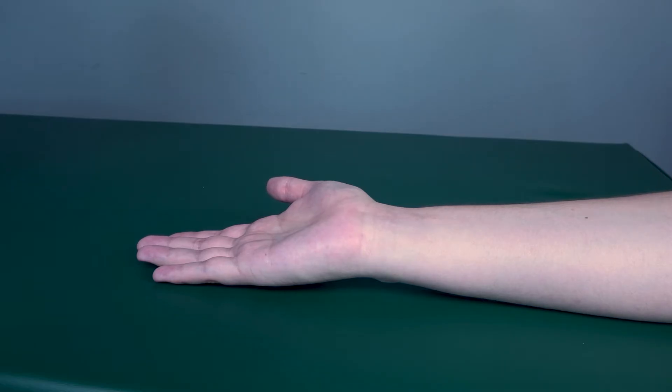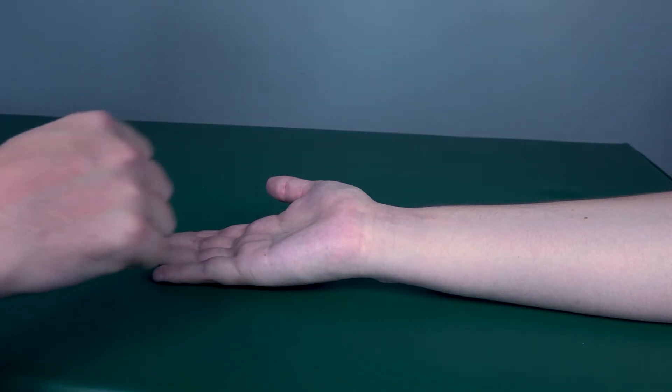Testing wrist flexion against gravity. Patient will be in a seated position with the forearm resting on the table, palm towards the ceiling.